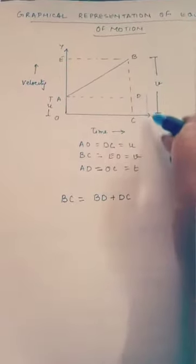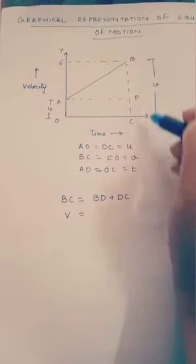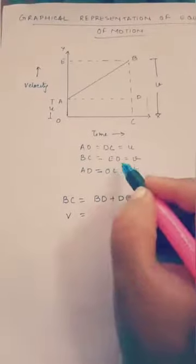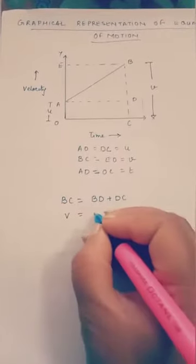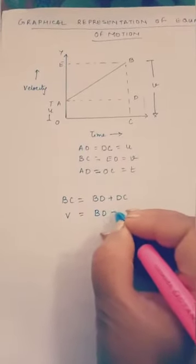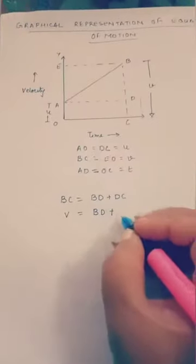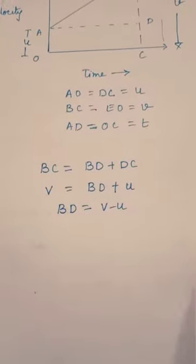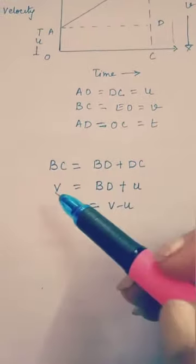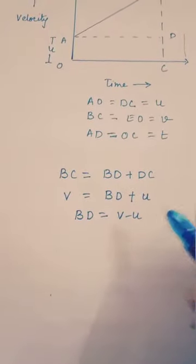Now, BC equals BD plus DC. We know the value of BC is V. We don't know the value of BD, so we write BD plus DC. The value of DC equals AO, which equals U. So we have written V equals BD plus U.